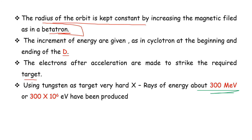Initially, electrons are injected into an orbit of fixed radius at 5280 kV. The radius of the orbit is kept constant, and the final energy reaches 300 MeV.